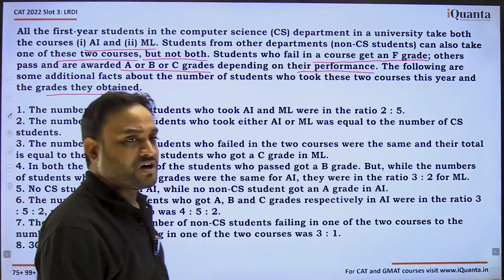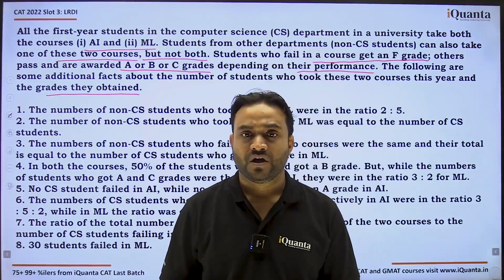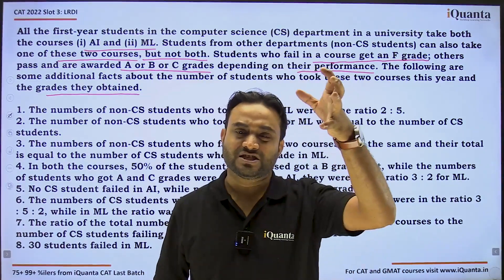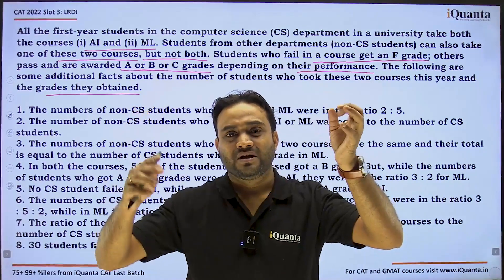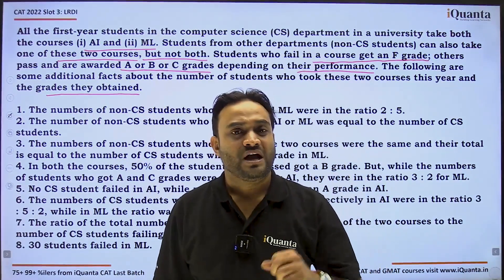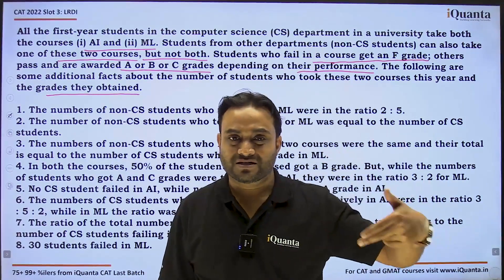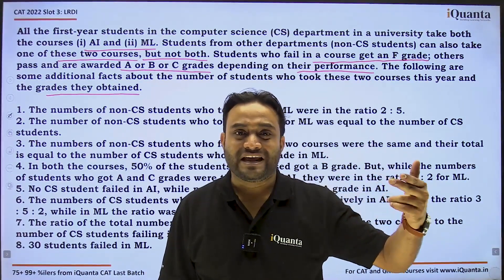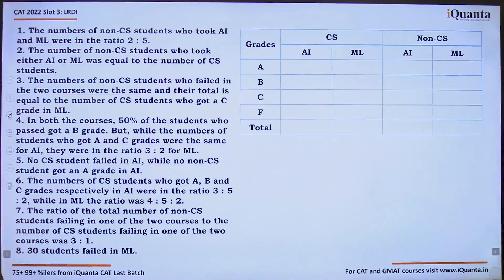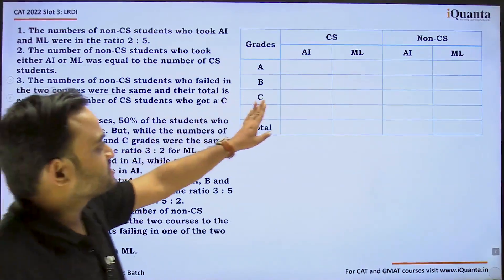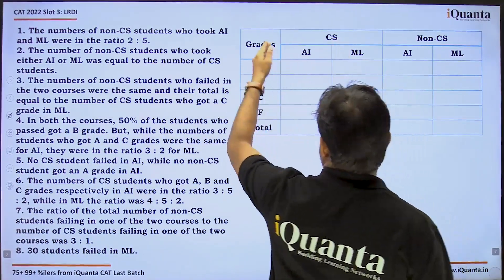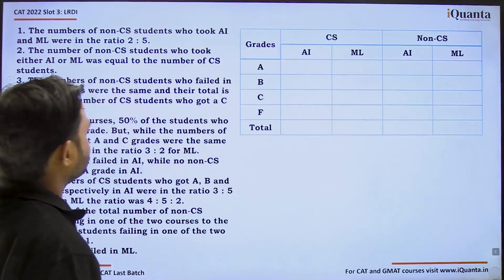We are required to make a table with CS students, non-CS students, courses they took — AI and ML — and grades A, B, C, F.